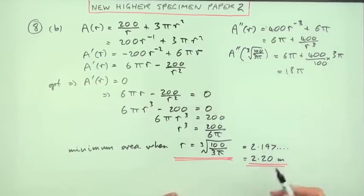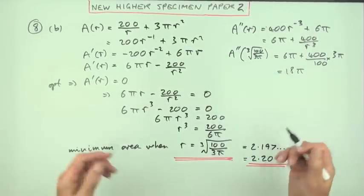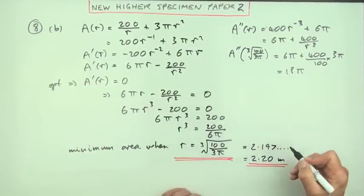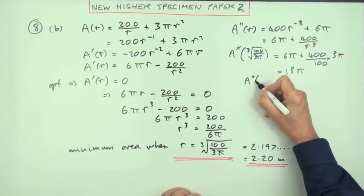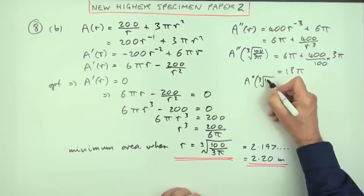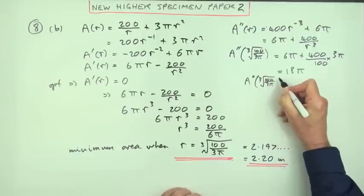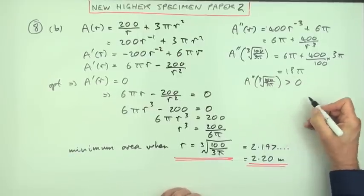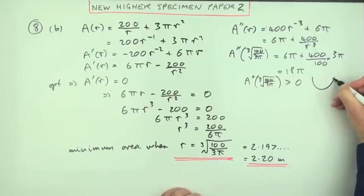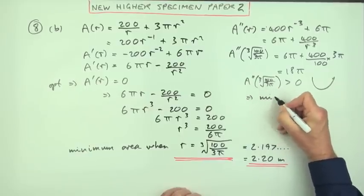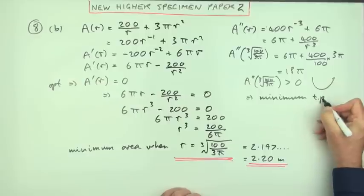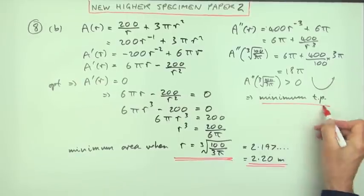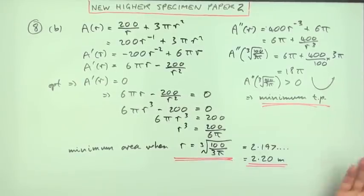Notice this is looking less convincing now compared to a nice wee nature table, sometimes it works out that way. You've still got to make a statement: A double dashed is greater than zero, which means they're curving like this, which means you've got a minimum turning point. And that's it done.